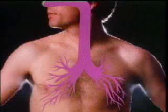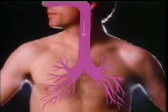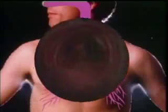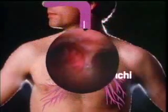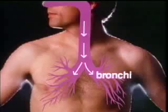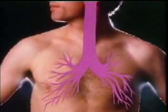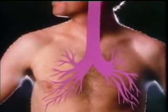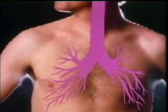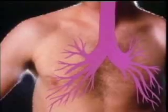Meanwhile, air that has been cleaned, warmed, and moistened continues down the trachea. Soon, the trachea divides into two smaller tubes, the bronchi. These tubes enter the lungs, then divide again and again until they are microscopic in size.